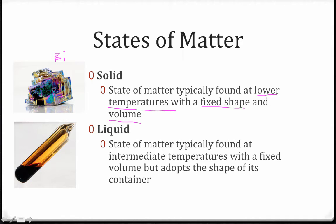The second state of matter we're interested in here would be the state of liquid. This is a state of matter typically found at intermediate temperatures with a fixed volume, but it adopts the shape of its container, meaning it has no definite shape like solids do. This here is a sample of the element bromine, which is one of the few elements like mercury that's liquid at room temperature.